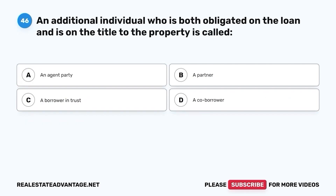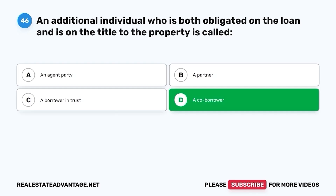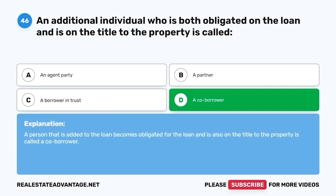Question 46. An additional individual who is both obligated on the loan and is on the title to the property is called: A. An agent party. B. A partner. C. A borrower in trust. D. A co-borrower. The correct answer is D. A co-borrower. A person that is added to the loan becomes obligated for the loan and is also on the title to the property — this is called a co-borrower.